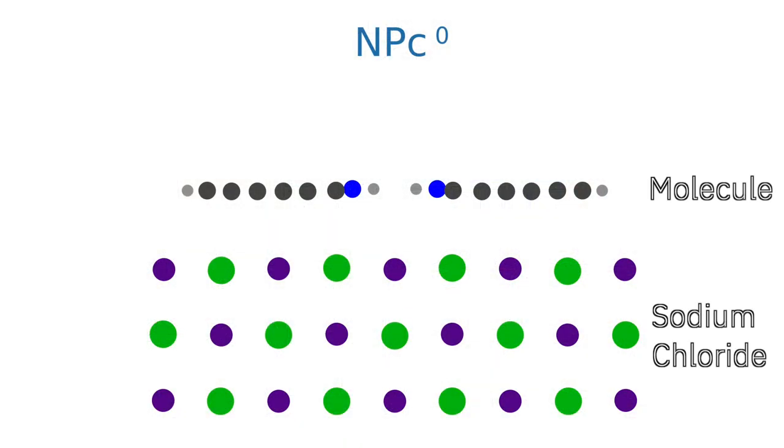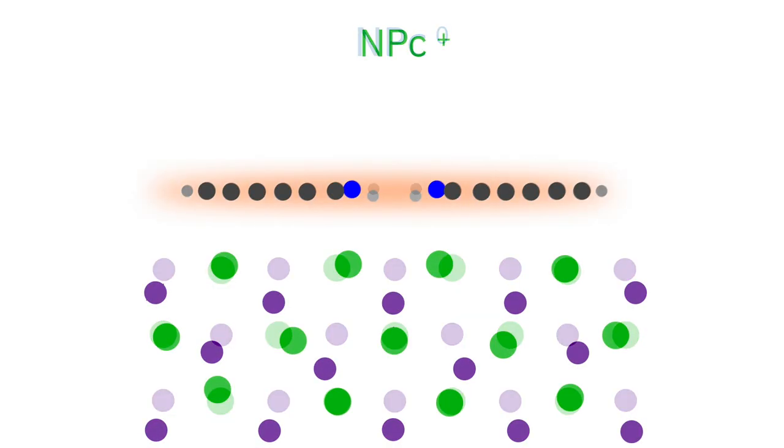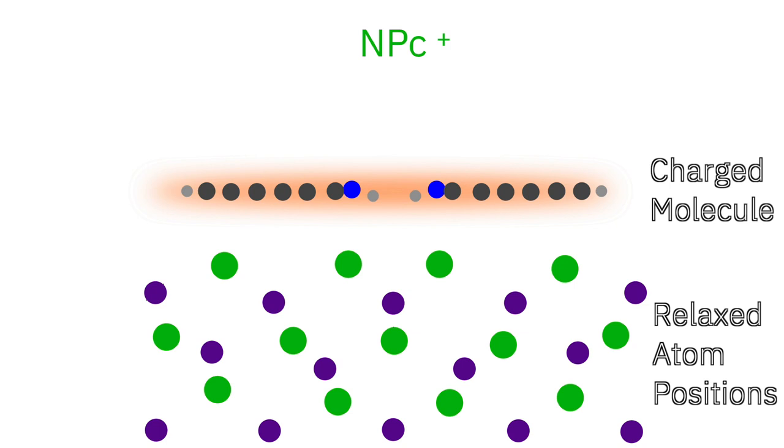Molecules can be charged by adding or removing single electrons. When on a support, the atoms in the support will react towards this additional charge. This effect has important implications for future devices based on electron transfer between molecules.